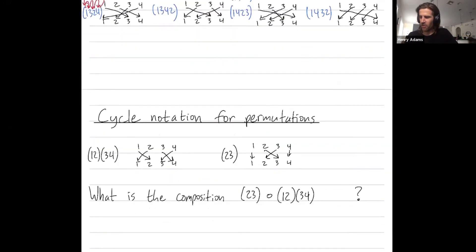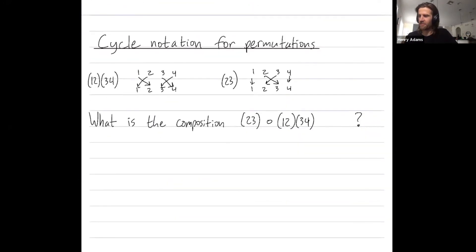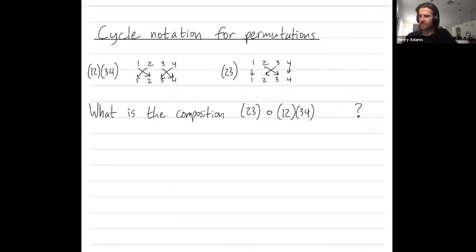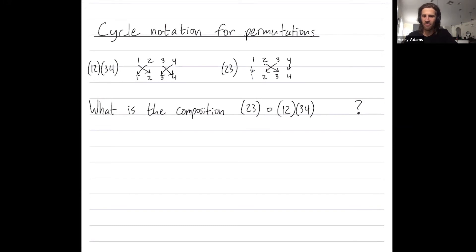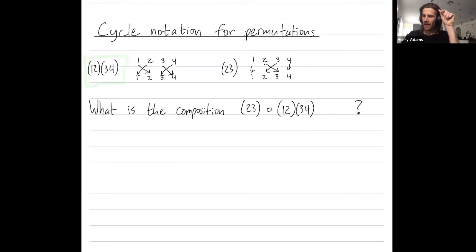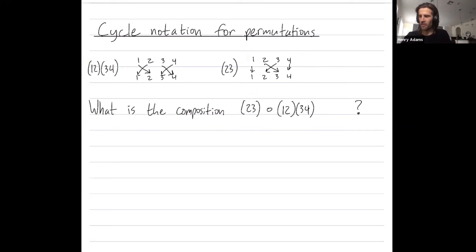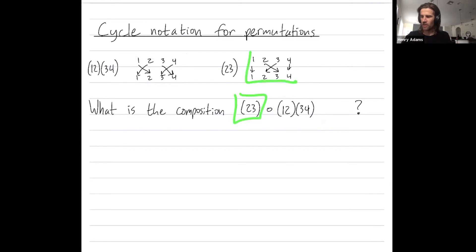I want to show you how to multiply things in cycle notation. Here are two permutations: the first permutation swaps one with two and swaps three with four, and the other one swaps only two and three. We're going to multiply them — doing (1 2)(3 4) first and then afterwards doing (2 3).